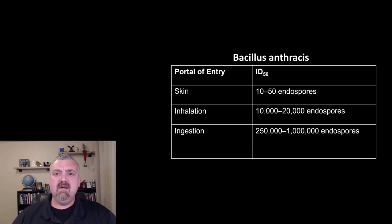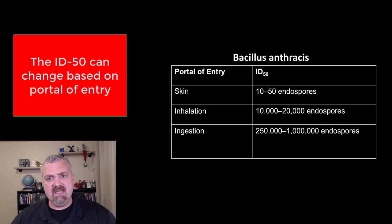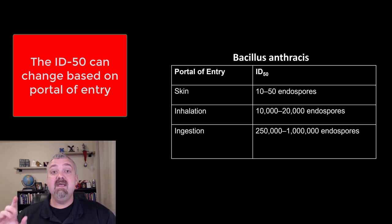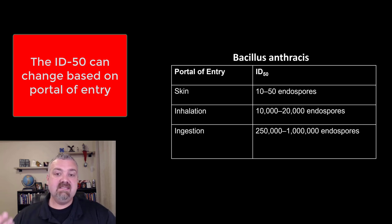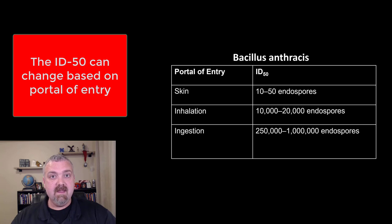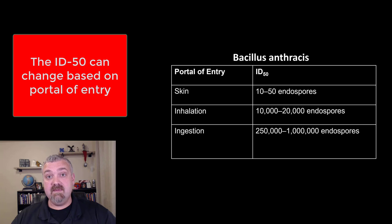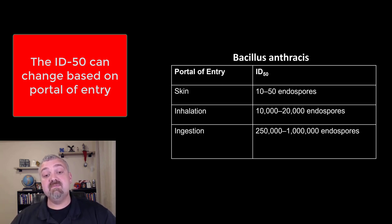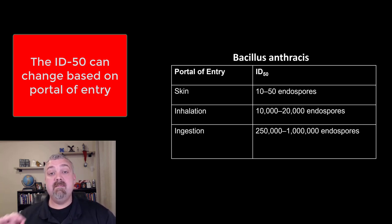One more thing to think about with infectious dose is the portal of entry. Here's an example of an organism — Bacillus anthracis, which causes anthrax — that has a different infectious dose depending on the portal of entry. It takes 10 to 50 endospores to cause cutaneous anthrax with skin contact. Inhalation anthrax — which is generally what we think of, especially with it being used as a biological weapon — takes 10 to 20,000 endospores. And then ingestion anthrax would be 250,000 to a million endospores. So the portal of entry matters.